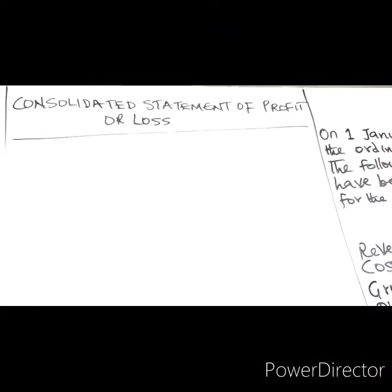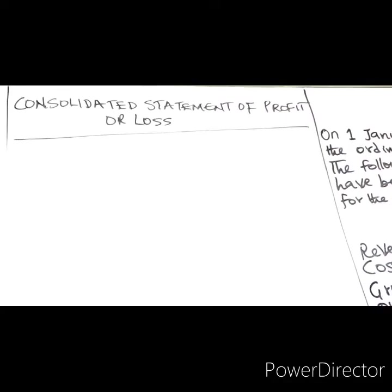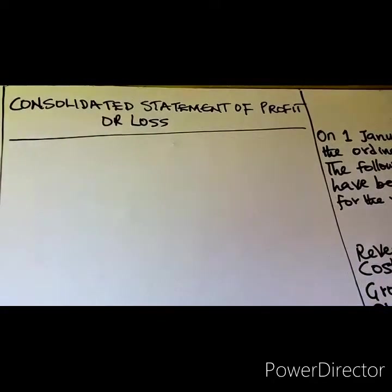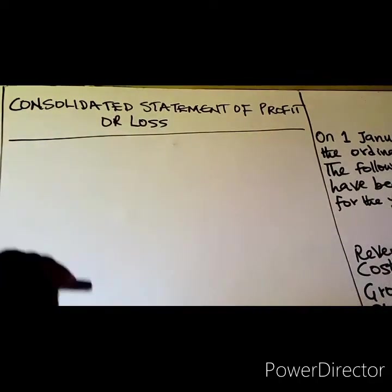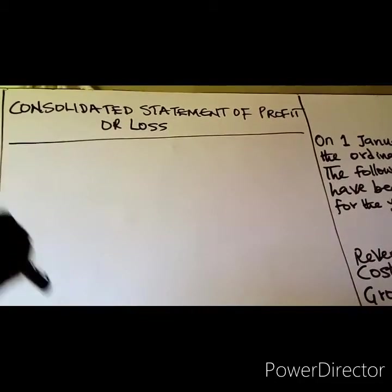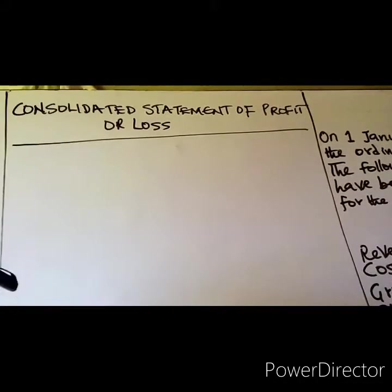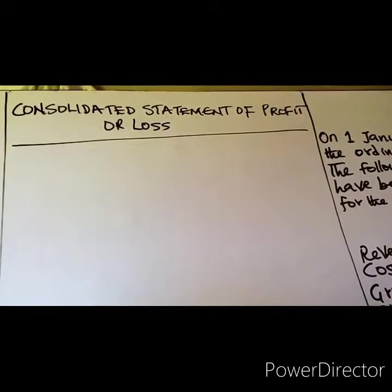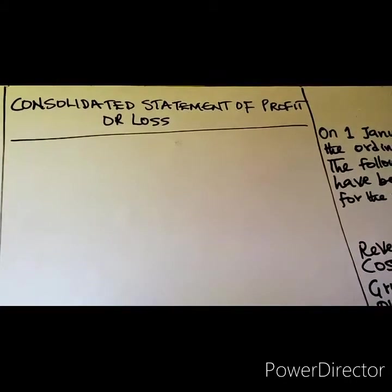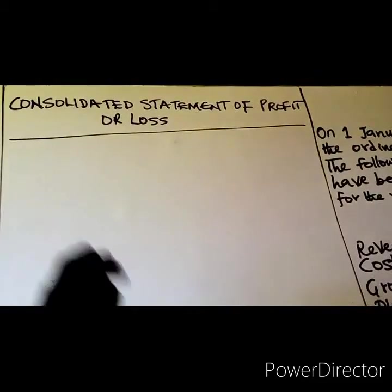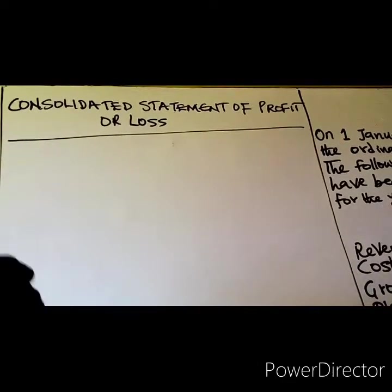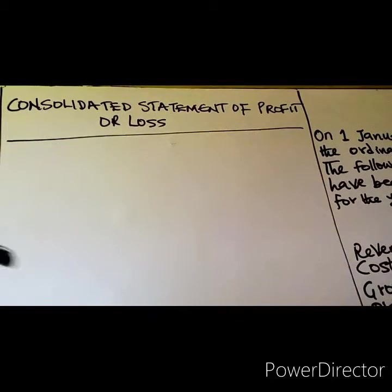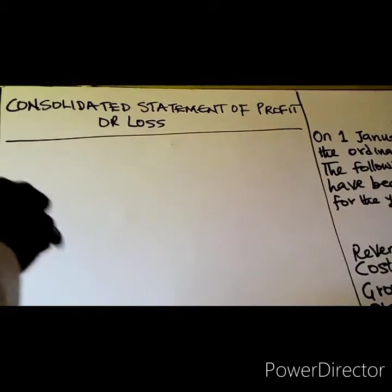The consolidated statement of profit or loss shows the profits generated by all resources disclosed in the related consolidated statement of financial position — that is, the net assets of the parent company and its subsidiary.